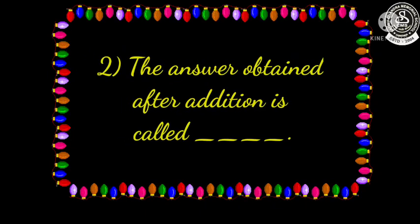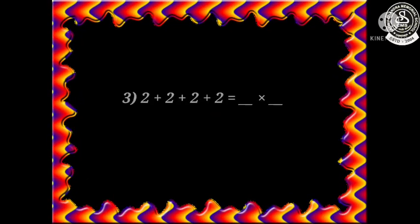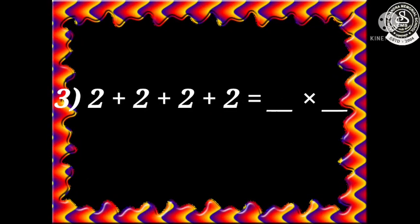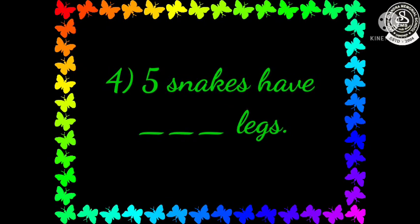Now number three: two plus two plus two plus two equals dash multiplied by dash. Now let us see question number four: five snakes have dash legs. So first you have to check how many legs there are, and then you will get the answer.